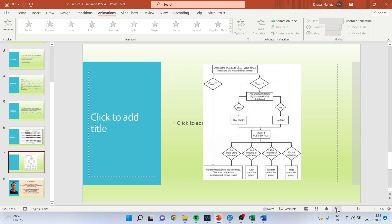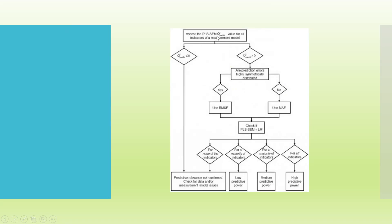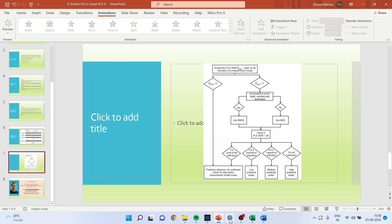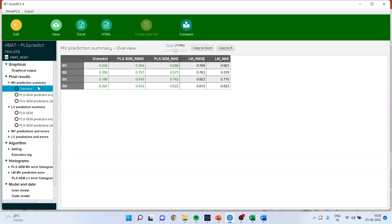There is a procedure for which errors to compare. First, assess the PLS-SEM Q-square predict value for all indicators of the measurement model. Are they less than or equal to 0? If so, straightforwardly terminate the process — predictive relevance is not confirmed. Check for data and measurement model issues. You cannot go ahead, so first check the Q-square predict.